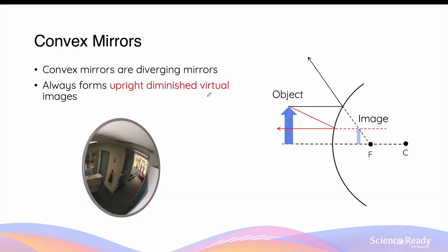Let's go through convex mirrors. Convex mirrors are the ones that bulge outward. These mirrors are known as diverging mirrors because when the light rays reach the convex mirror, the reflected light rays are all diverging. They travel away from each other. The implication of this diverging mirror is that we will never be able to draw reflected light rays that intersect in front of the convex mirror because they're diverging.